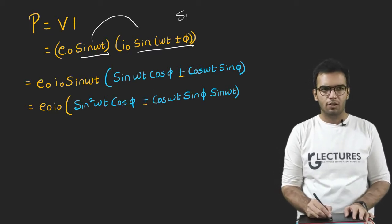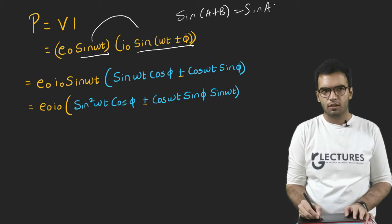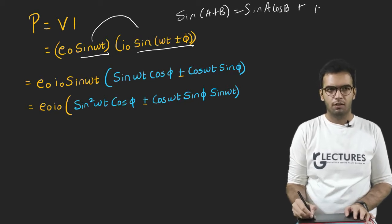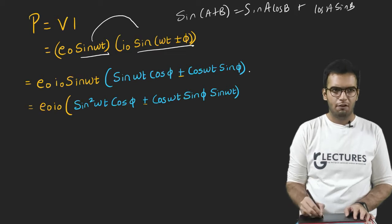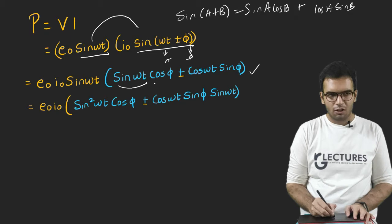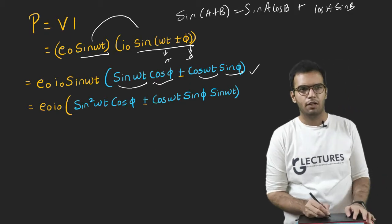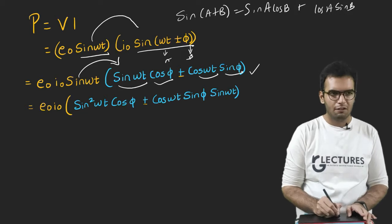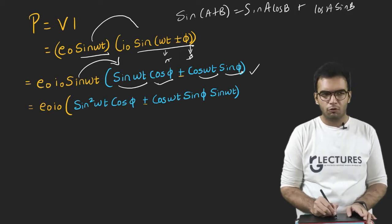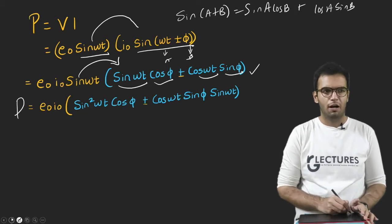So P equals VI. V is E₀ sin(ωt), my I equals I₀ sin(ωt ± φ). Wait a second, let us separate all the terms and expand this equation first. So this is sin(A + B), which equals sin A cos B plus cos A sin B. So in the second step, I have done this, so this is my A, this is my B. So sin A cos B, cos A sin B plus minus is common, multiply sin(ωt) by this. So this will become sin²(ωt) cos φ. Multiplying by this, it will become this. So this is my expression for power.